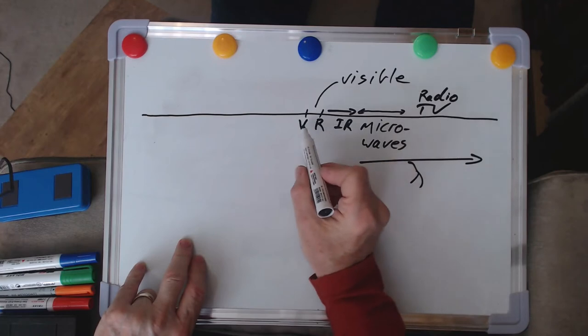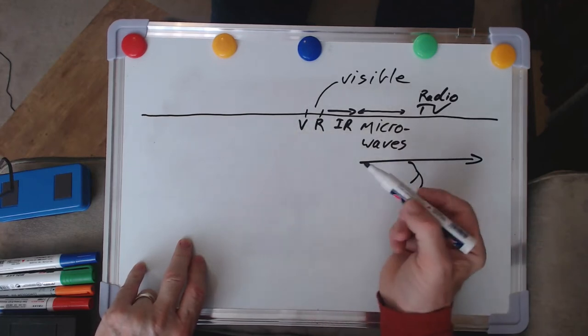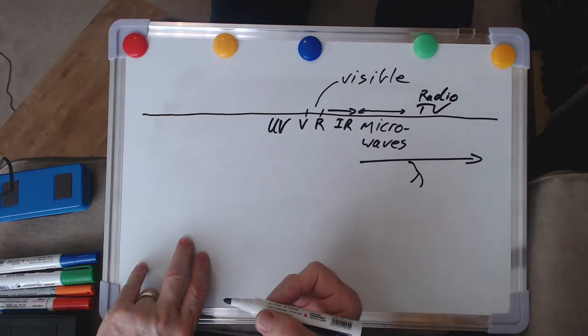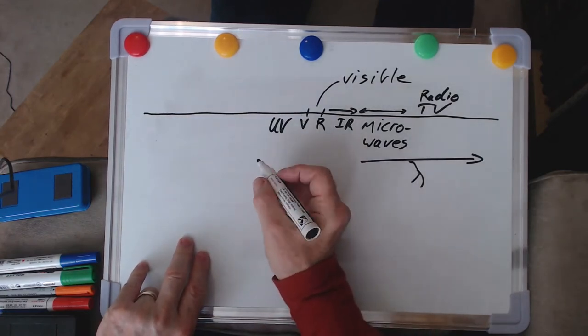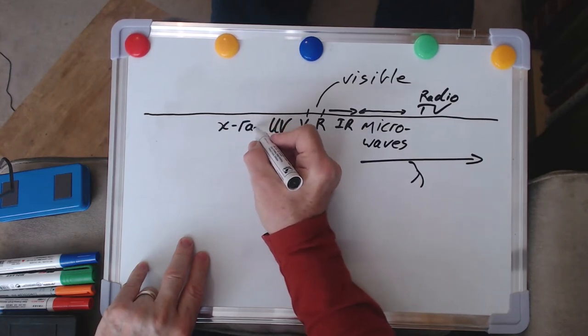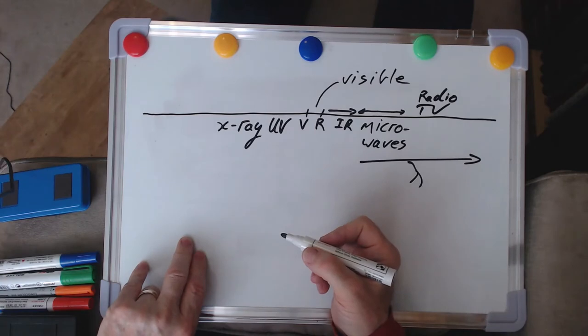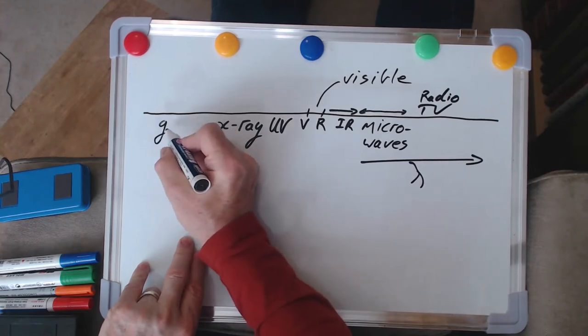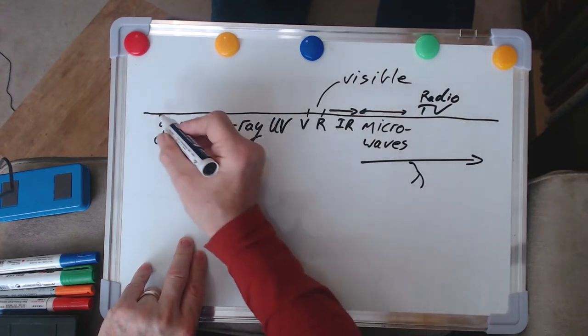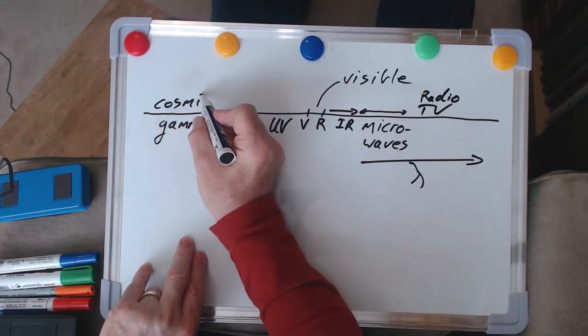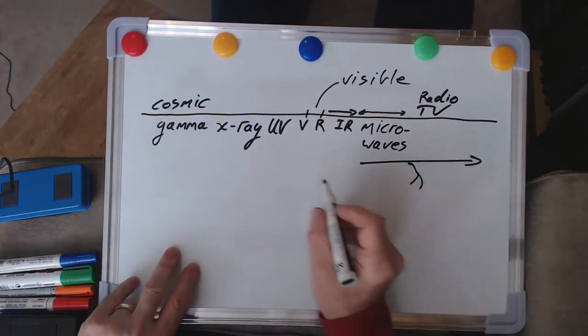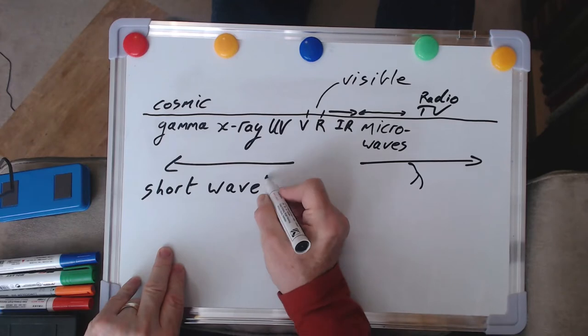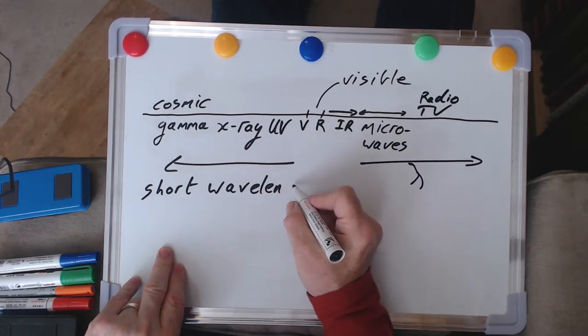But if we go to shorter wavelengths, so if we come out the other side of our visible spectrum out into the violet side, then the first thing we run into is something you all have heard of, of course, it's ultraviolet. Further out still, and we get into the region of X-rays. And even further, of course, we're then into the realms of gamma rays and even cosmic rays. And they're all out to this short wavelength end of our electromagnetic spectrum.